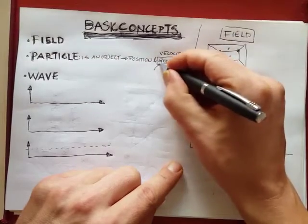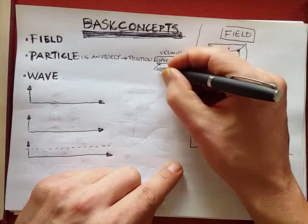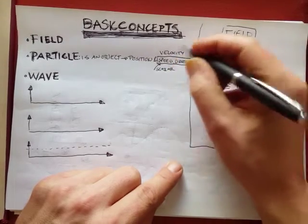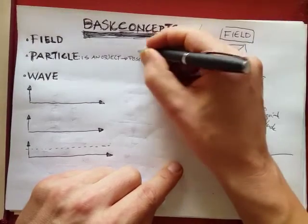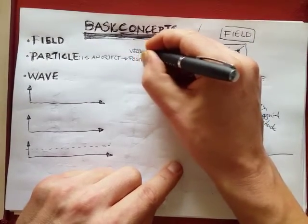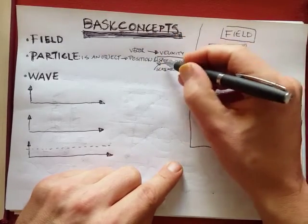So speed is a scalar because it only has a value. And velocity is a vector because it has a speed and a direction.